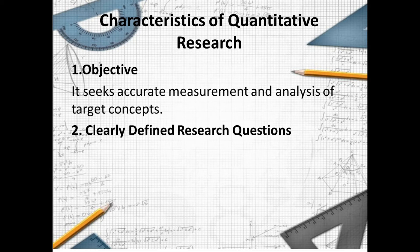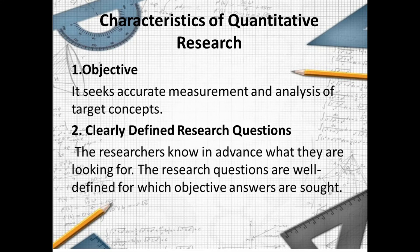Number two, quantitative research has clearly defined research questions. Researchers know in advance what they are looking for, but we must first acquire the evidence through numbers and the results of the study. The research questions are well-defined, for which objectives and answers are set.